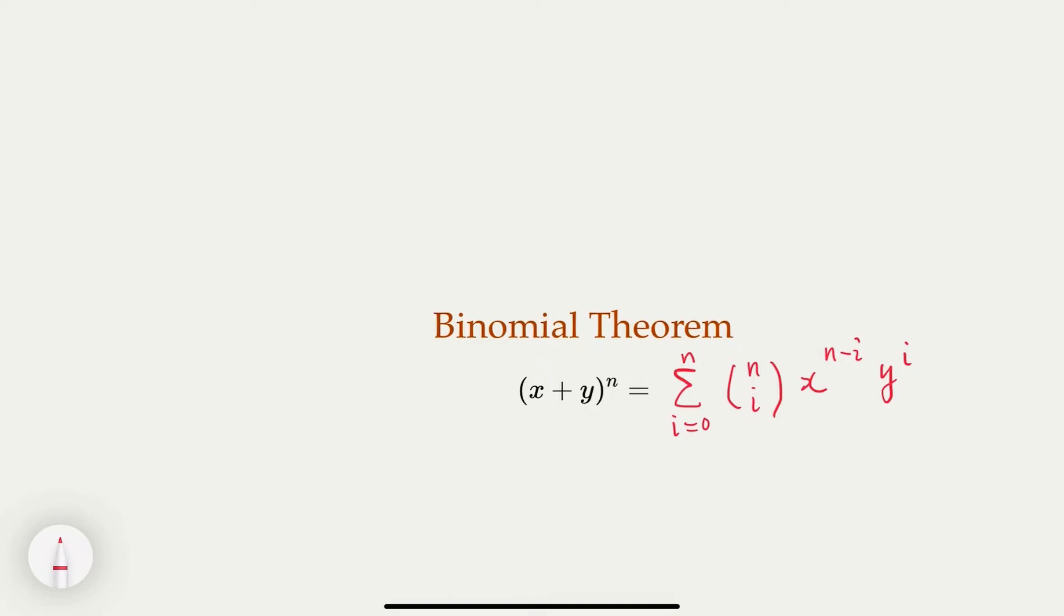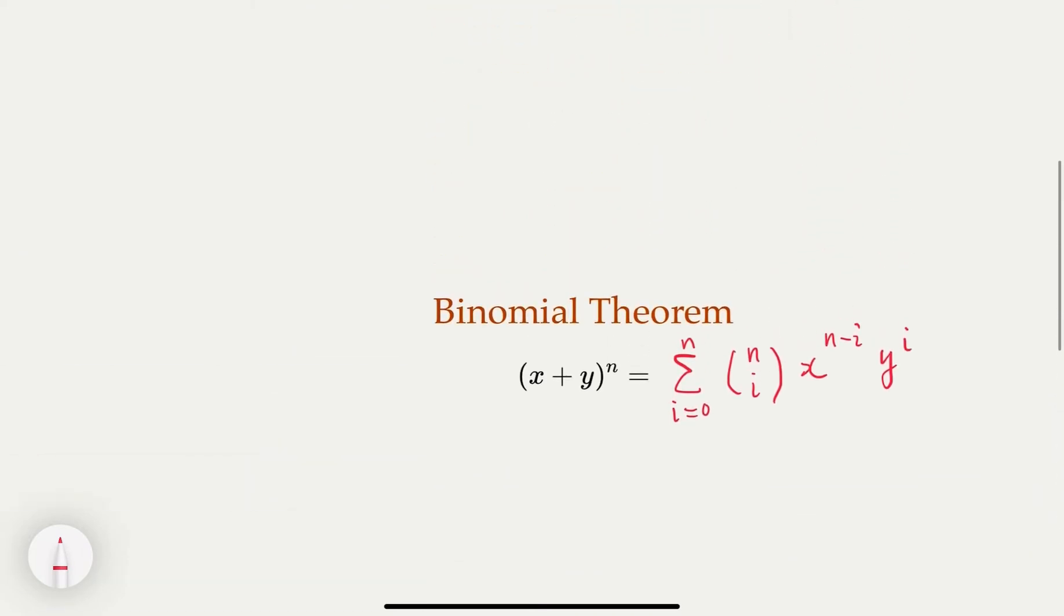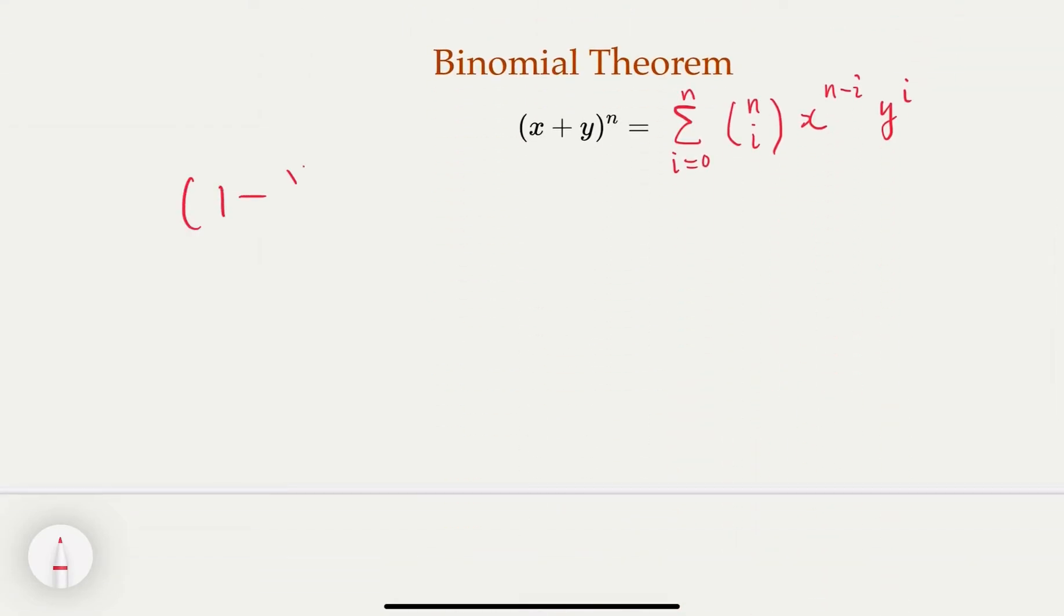So let's look at the original polynomial here. We have two terms: we have 1 minus y over x, and then x plus y to the nth power. If you actually use distributed law, this actually equals x plus y to the nth power minus y over x times x plus y to the nth power.